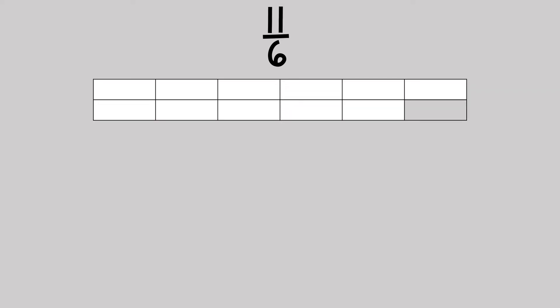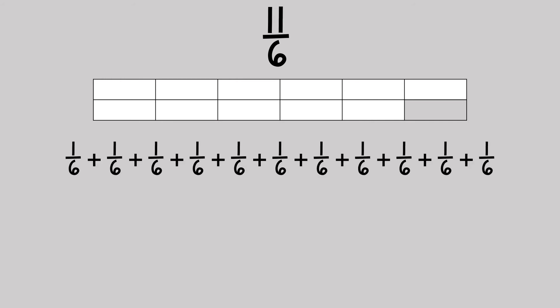Eleven-sixths is a fraction that is greater than one whole. We know that because six-sixths is the whole, and eleven is greater than six. We can represent this using a bar model — this is eleven-sixths shaded in. We can represent that by decomposing it into one-sixth eleven times.